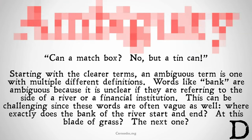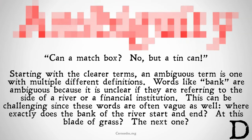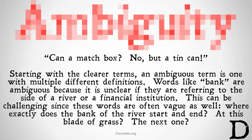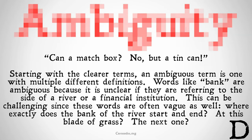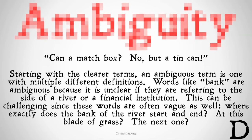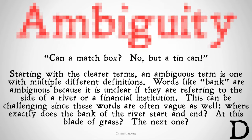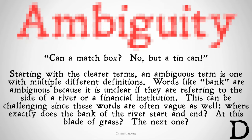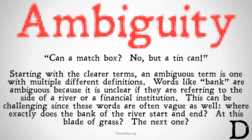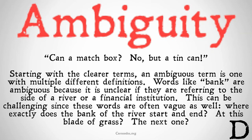Can a matchbox? No, but a tin can. Starting with the clearer terms, an ambiguous term is one with multiple different definitions. Words like 'bank' are ambiguous because it's unclear if they're referring to the side of a river or a financial institution.